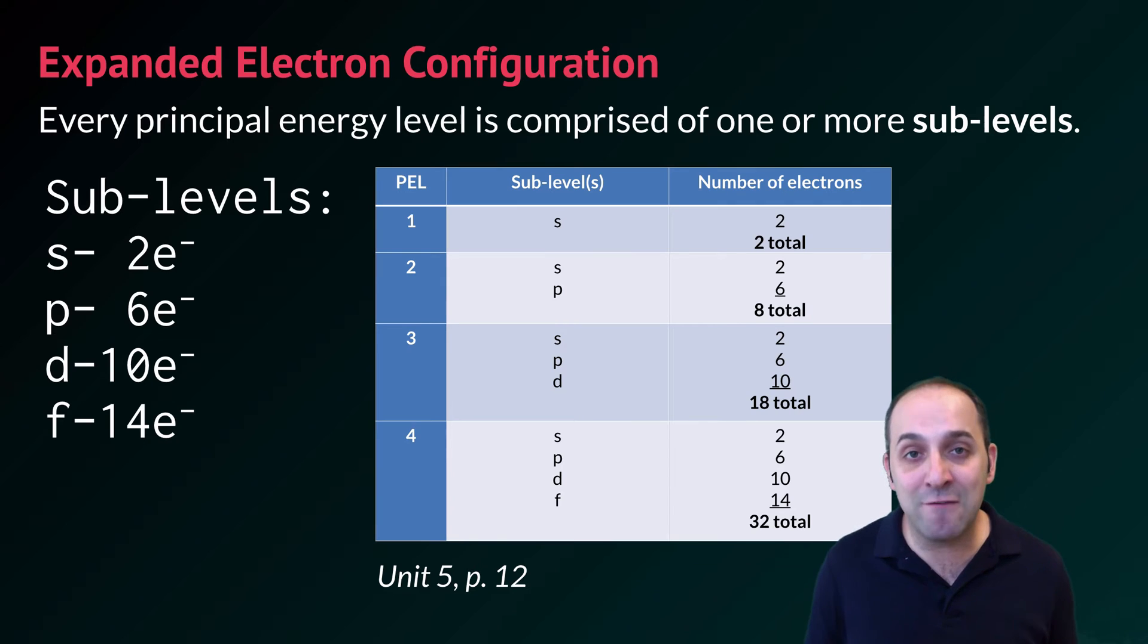Five, six, and seven all theoretically have S, P, D, and F sublevels as well. The elements on the periodic table do use the 5F sublevel, but after that we start to contract because we just run out of elements. A version of this chart is on page 12 in your unit five packet, but you can see that there is a pattern at work in our sublevels.